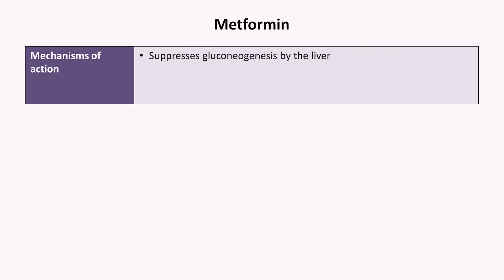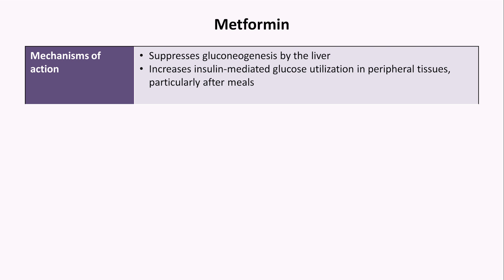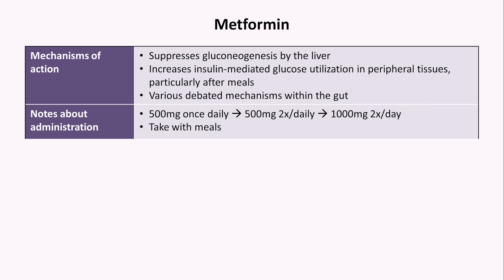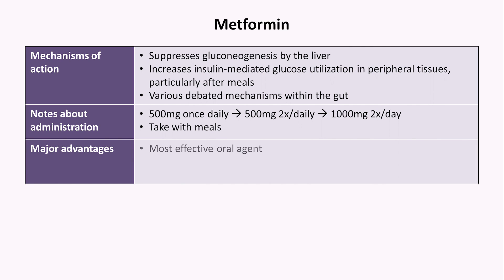Metformin suppresses gluconeogenesis by the liver via multiple incompletely understood mechanisms. It increases insulin-mediated, that is post-meal, glucose utilization in peripheral tissues, and there are various debated mechanisms within the gut. It's usually started at 500 mg once daily, then up-titrated to 500 mg twice a day, and then to 1000 mg twice a day. To minimize side effects and because it's most effective at blunting post-meal glucose spikes, it should be taken with meals. The major advantages of metformin are that it is the most effective oral agent at lowering hemoglobin A1c, it does not cause hypoglycemia, and it's inexpensive.